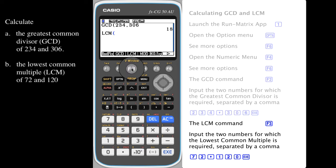Once again, input the two numbers for which the lowest common multiple is required: 72, then the comma to separate, then 120. Press execute to see that the lowest common multiple of these two integers is 360.